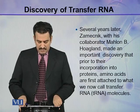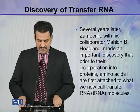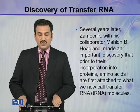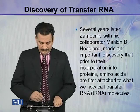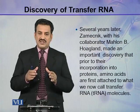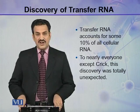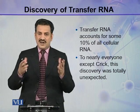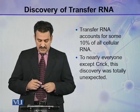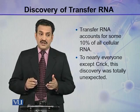Several years later, Zamecnik and his collaborator Mahlon B. Hoagland made an important discovery: prior to their incorporation into proteins, amino acids are first attached to what we now call transfer RNA or tRNA molecules. Transfer RNA accounts for some 10% of all the RNA present in a cell. To nearly everyone except Crick, this discovery was totally unexpected.